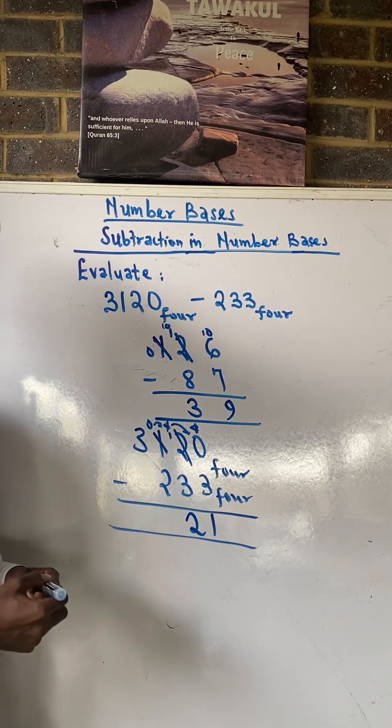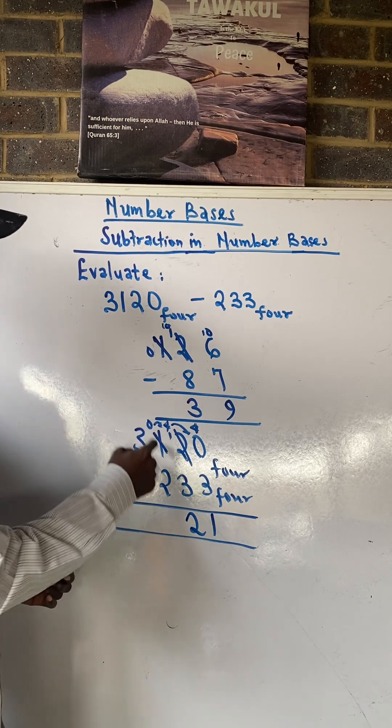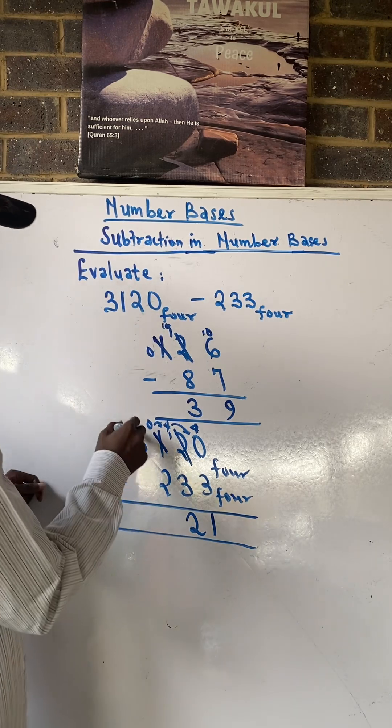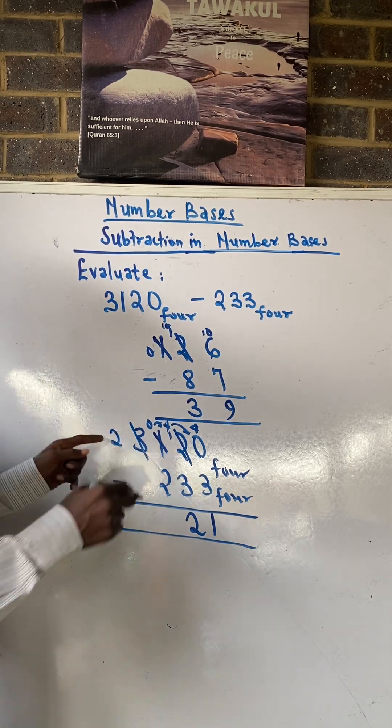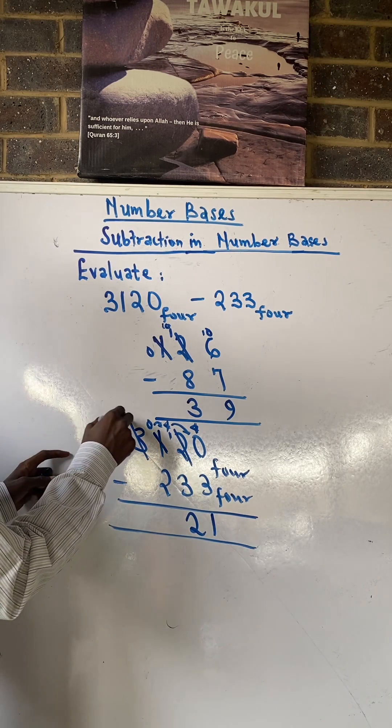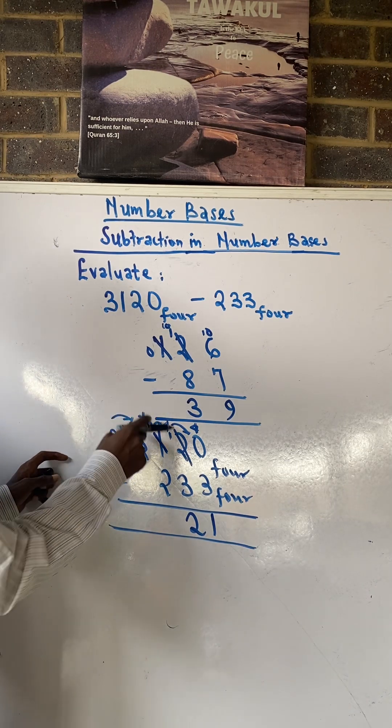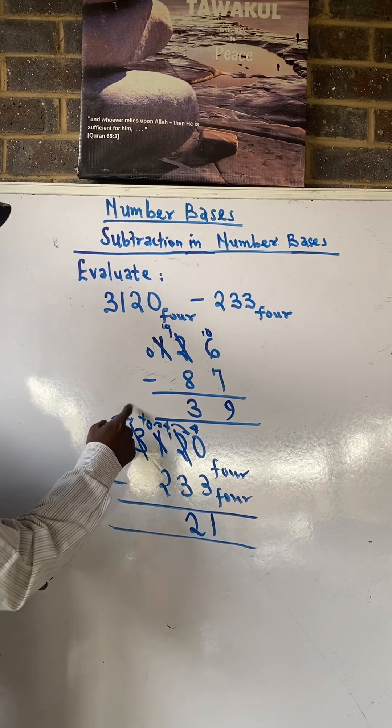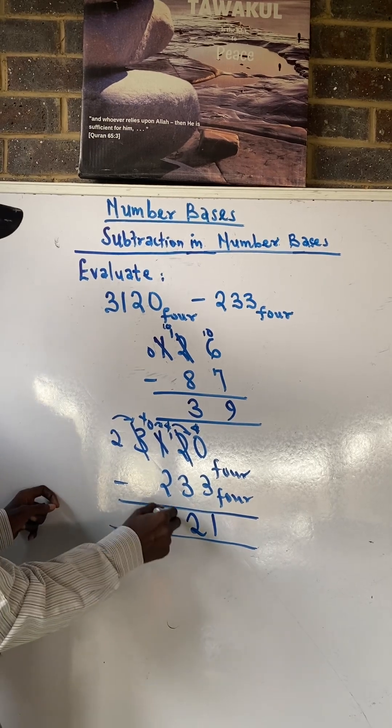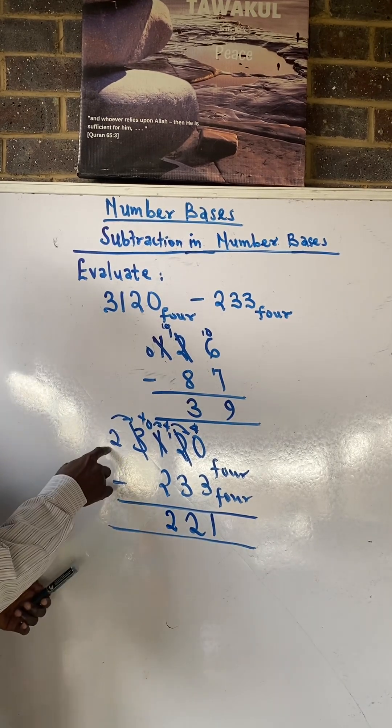So we have 0 left here, 0 minus 3 is also impossible. I still have to borrow from here, so this remains 2. By the time I throw the 1 to this place it becomes 4. 4 plus 0 is 4, 4 minus 2 that will give me 2. And then we have 2 here, we have 0 here. 2 minus 0 that will give me 2.